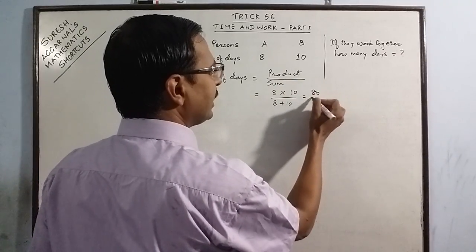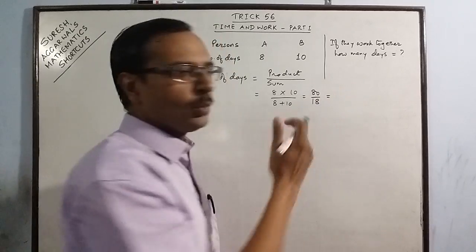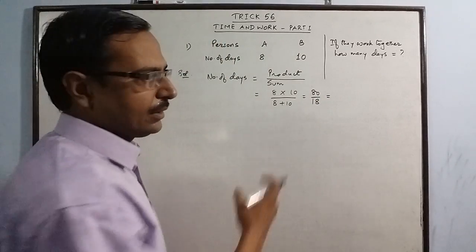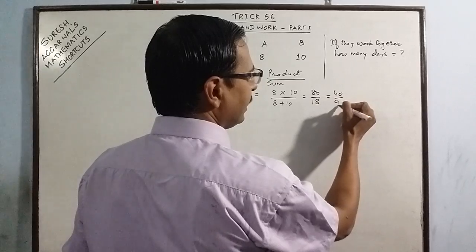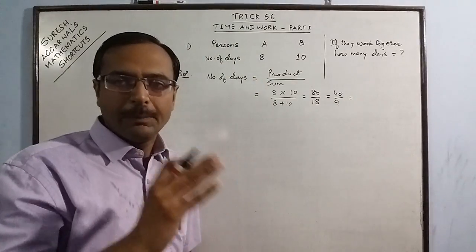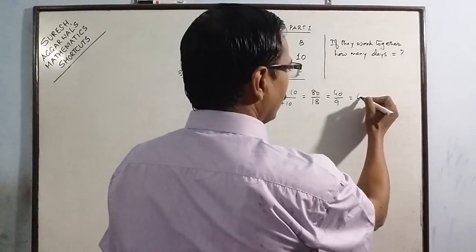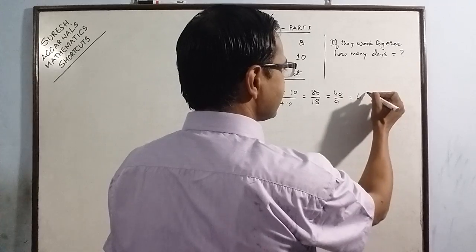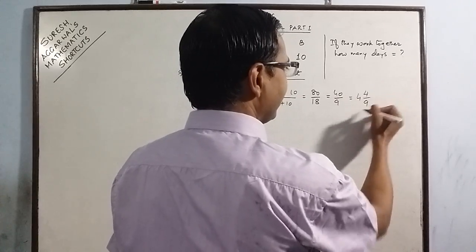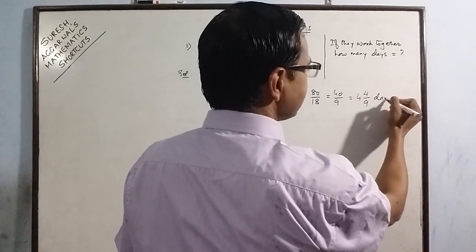This will give you 80 upon 18 which when you cut by 2, it will give you 40 upon 9 and when you convert it into a mixed fraction, it will give you 4, 9 plus 36 and remainder 4 and divisor 9. 4 by 9 days is your answer.